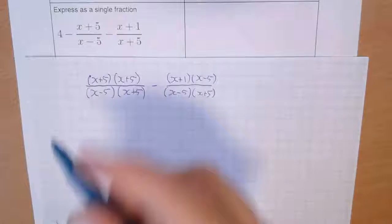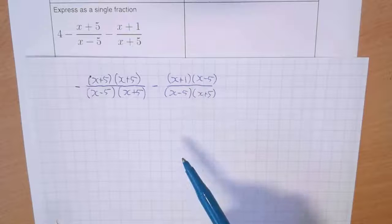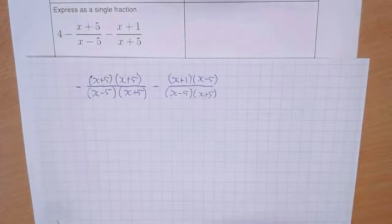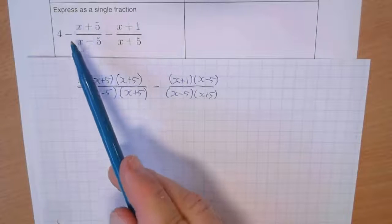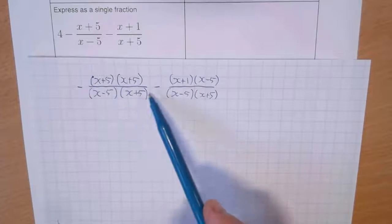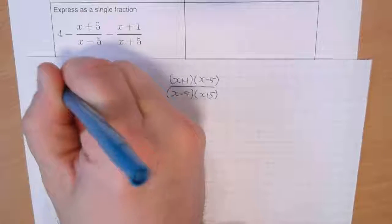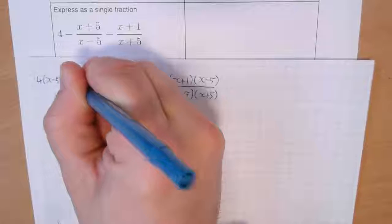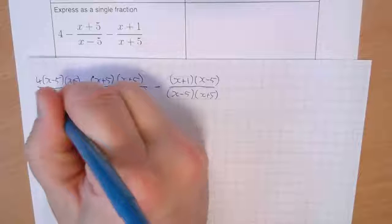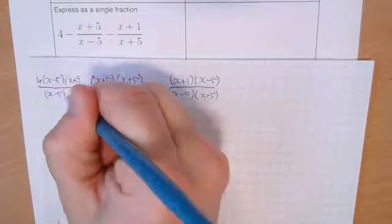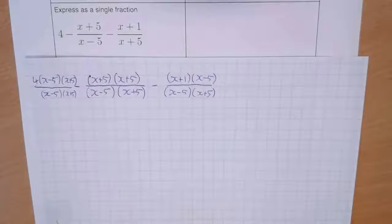The 4 is the bit where people get confused. If you weren't sure about the 4, still do all the fraction work. The 4 is not really a problem — I can just multiply top and bottom both by (x−5)(x+5), so I've got 4(x−5)(x+5) over (x−5)(x+5). I've just run out of space a little bit.